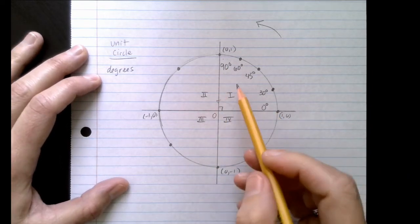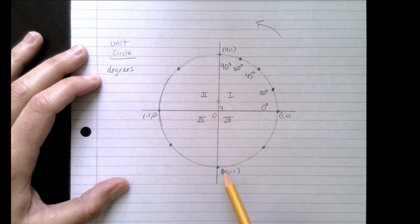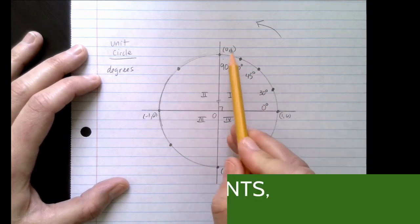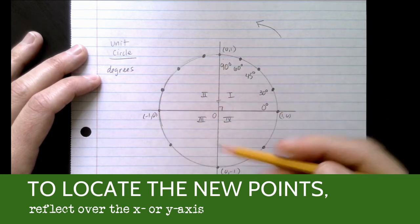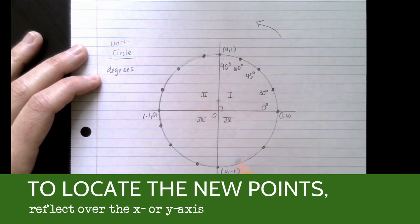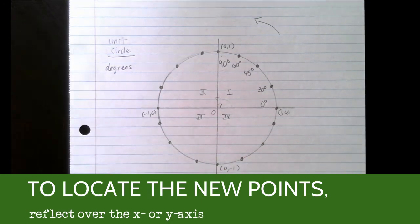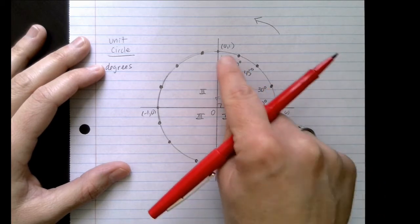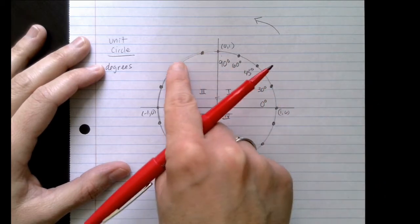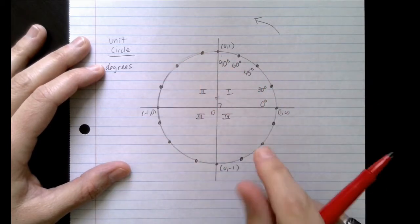So now what I want you to do is repeat those dots on all four other quadrants. Because of symmetry, because I know these numbers here, I can actually find the respectable numbers on the other side. Here's how this works.